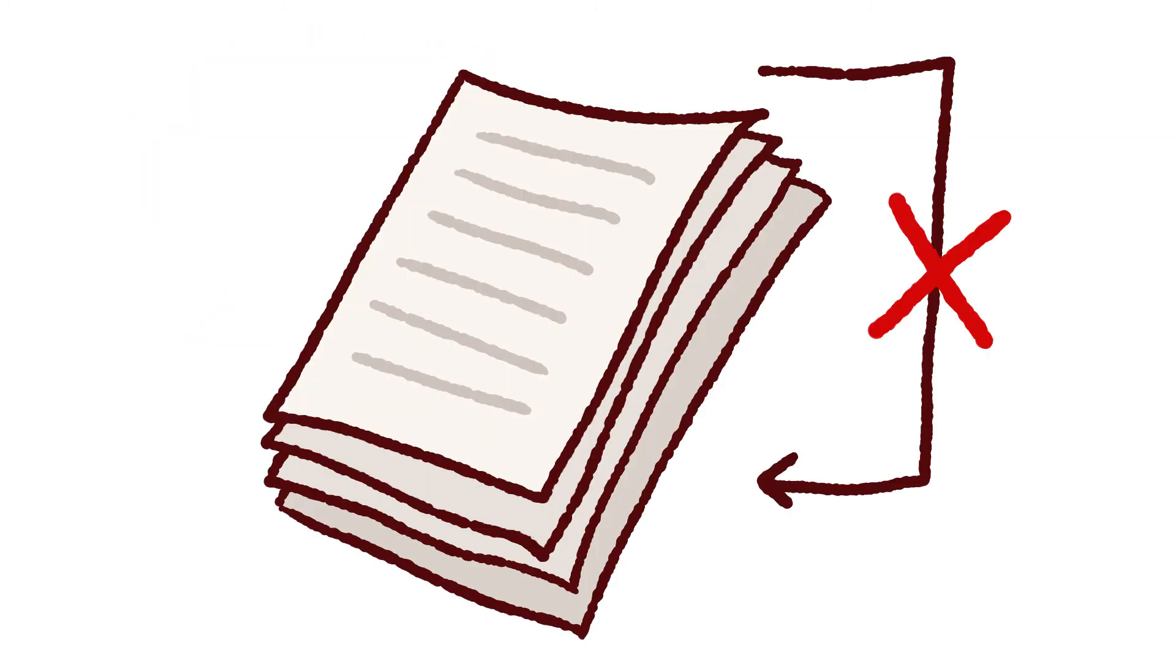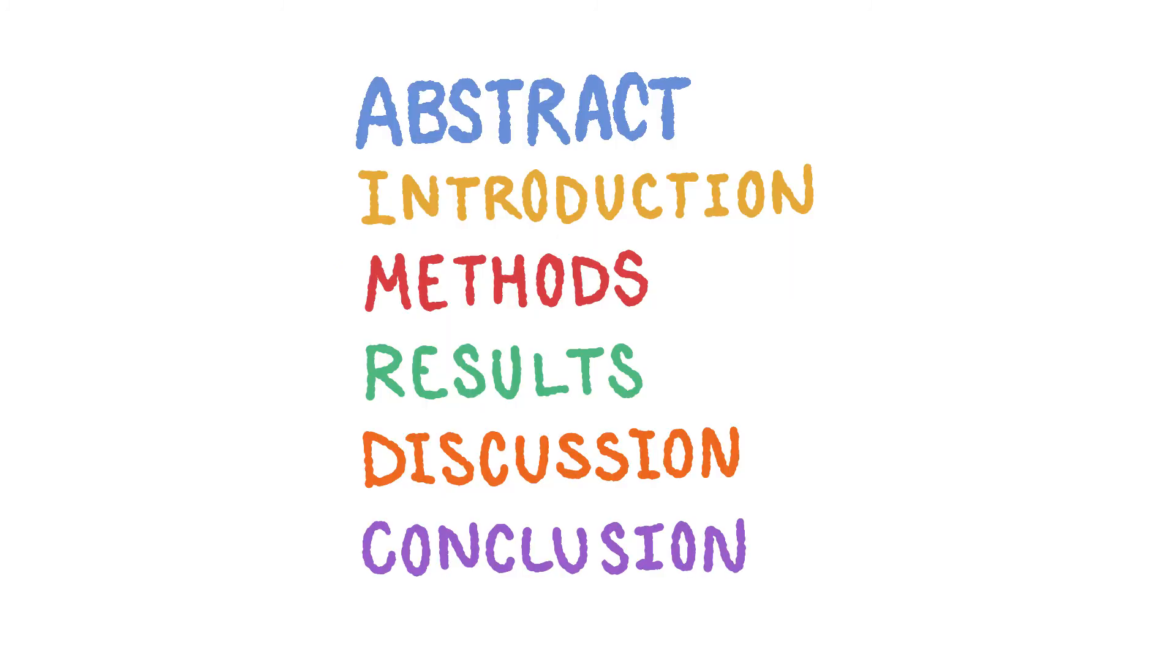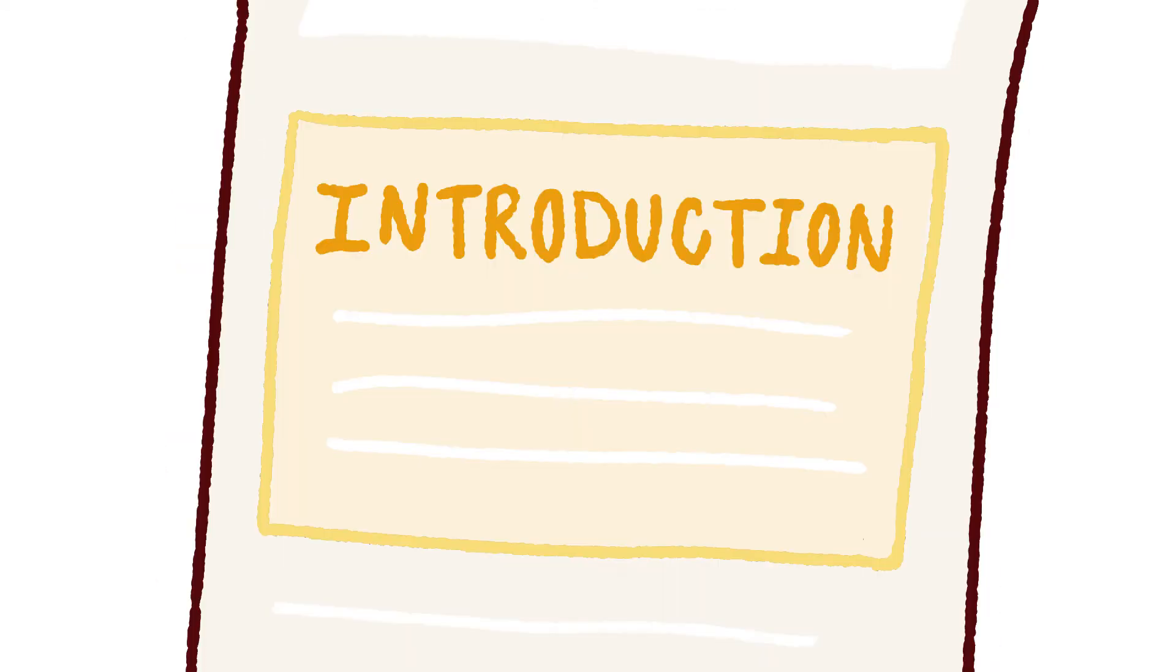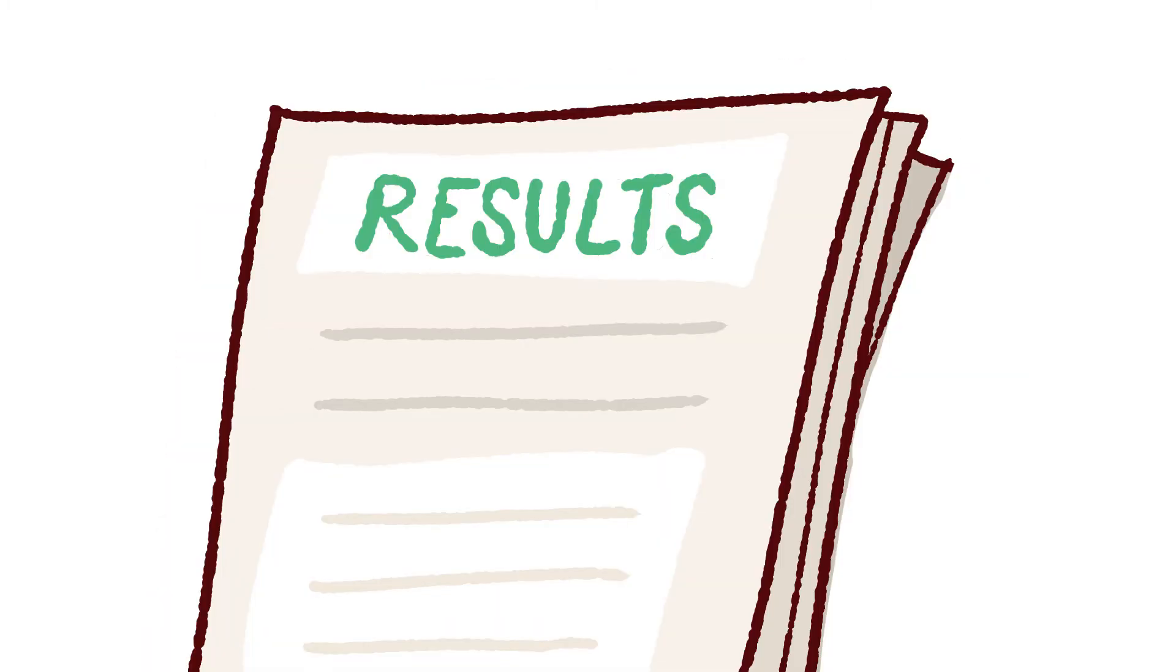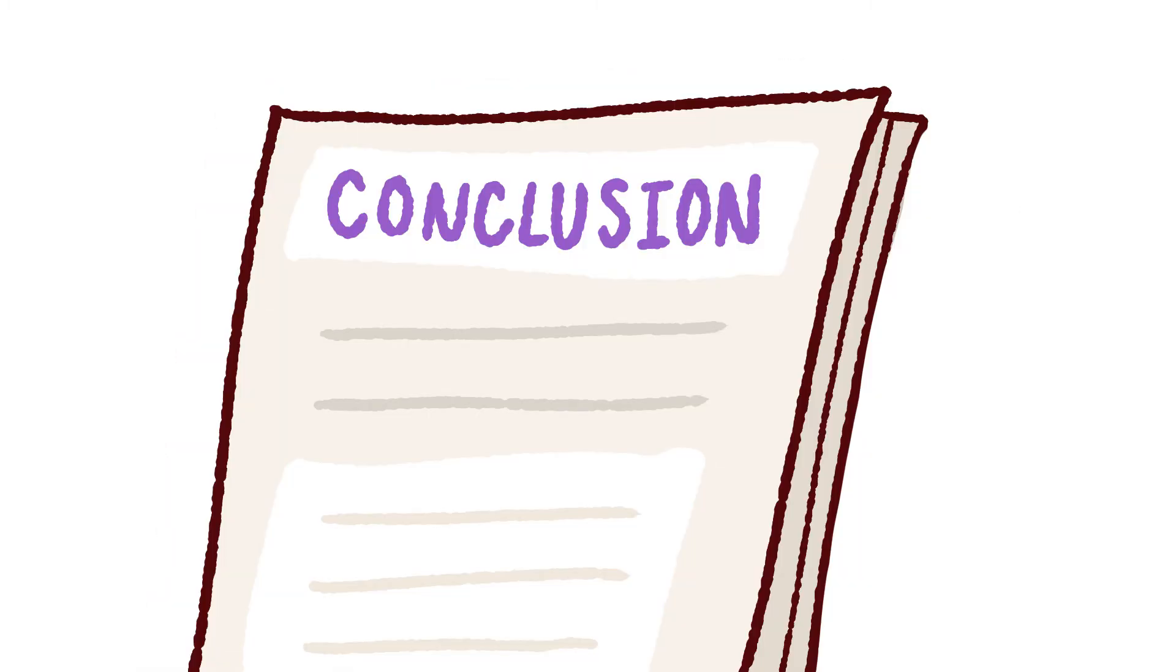Remember, you don't always need to read the whole article and you don't need to read the sections in order. Always start with the abstract. If, after reading it, the article still seems relevant to your research, then move on to the introduction and the discussion. You can get away with skimming or even skipping the methods, results, and conclusion sections most of the time.